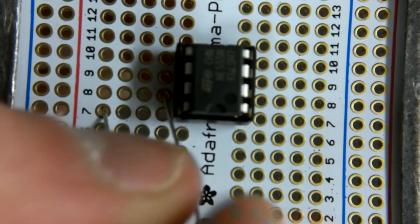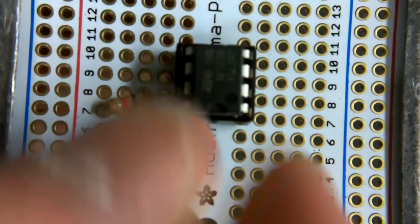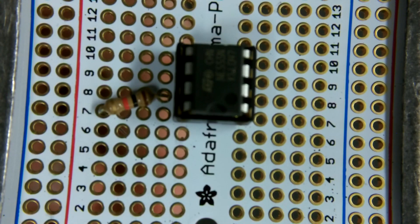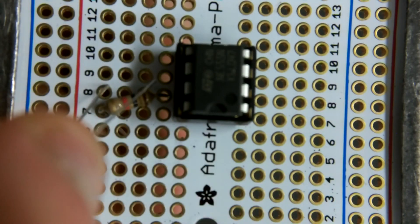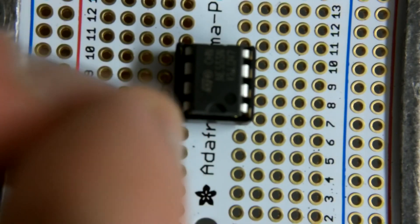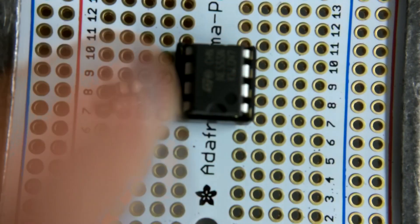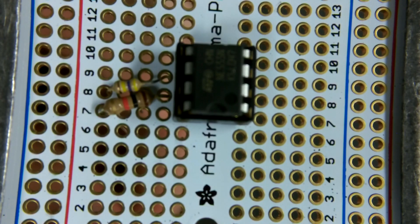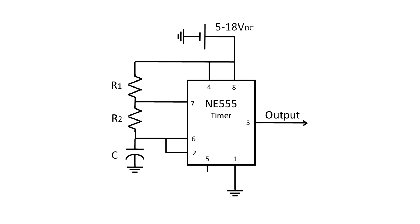R1 connects pins 8 and 7, and R2 connects pins 7 and 6. As I showed in the schematic, in order to make it variable, I'm going to be replacing the second resistor with a potentiometer.